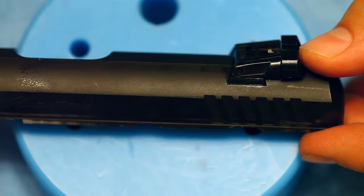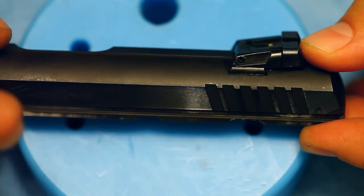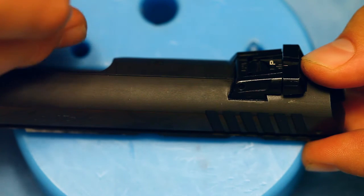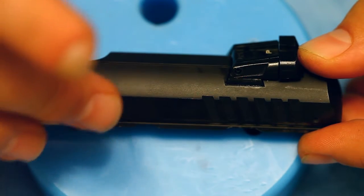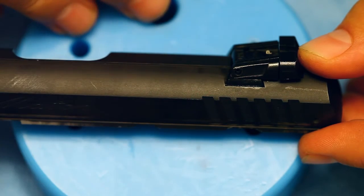Now we're going to want to drift our rear sight out from left to right, so the side that says 'match' towards your side with your shell ejector. You're going to want to pound from this side to the side with the ejector.